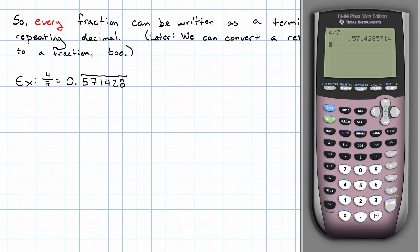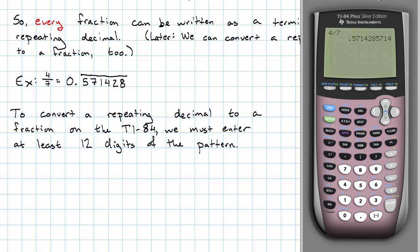How would I convert that back to a fraction using my calculator? It turns out that in order to convert to a fraction using the calculator, if we have a repeating decimal, we have to enter at least 12 digits of the repeating pattern. This is 6 digits, so I'll have to go through the pattern twice.